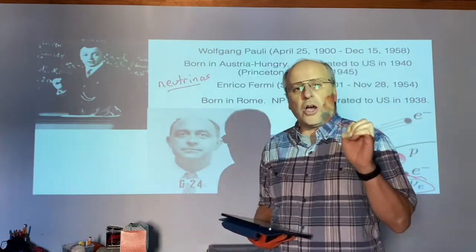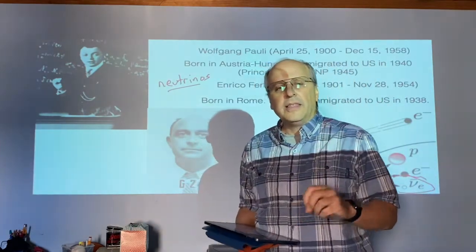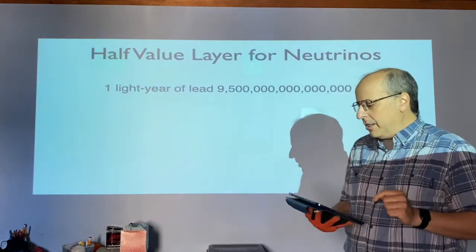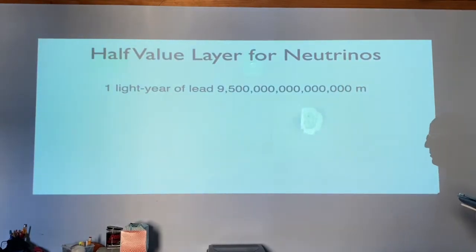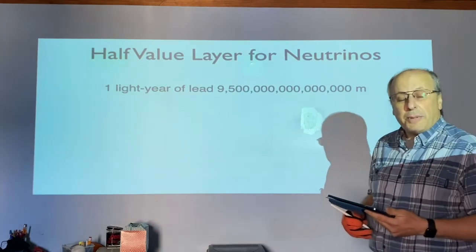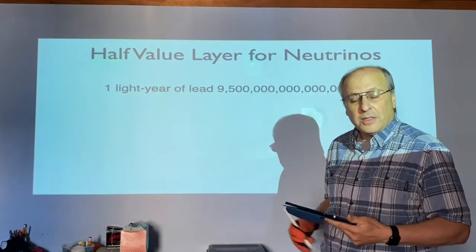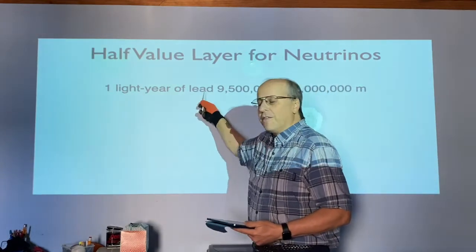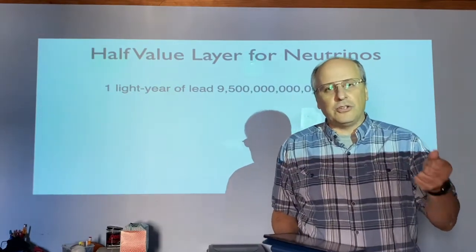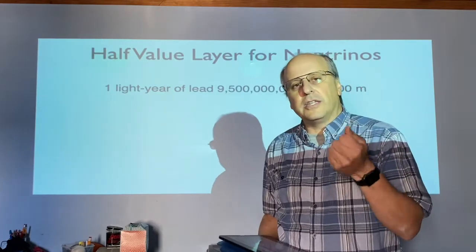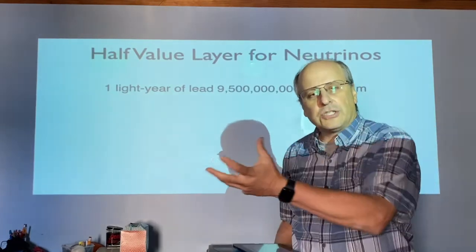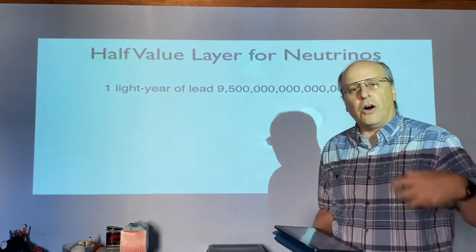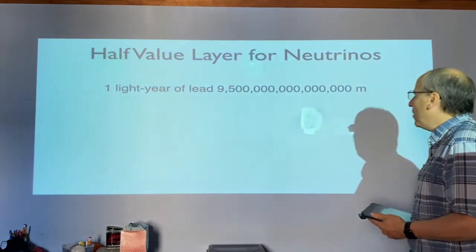Now neutrinos are extremely light. They are incredibly hard to detect. And when we look at the half value layer for neutrinos, if you want to stop half the neutrinos that were coming towards you, you would need one light year of lead. So these neutrinos are incredibly hard to stop.